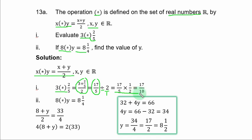And you have 17 over 5 times 1 over 2. If you invert that fraction, that is 17 over 10.